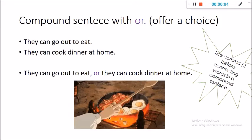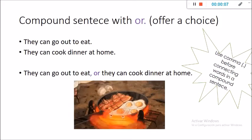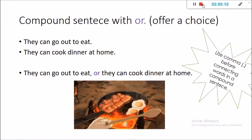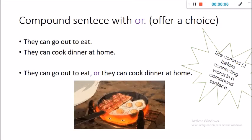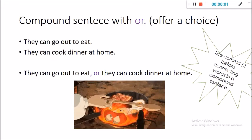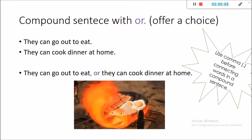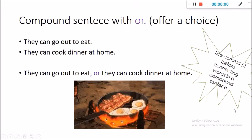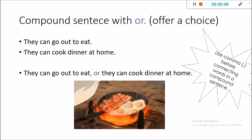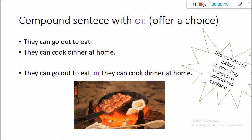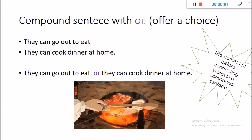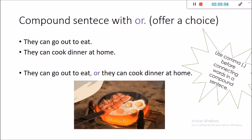Compound sentences with or — offer a choice. Enunciados compuestos con la palabra or. Aquí se utiliza el or cuando ofreces otra opción. Here I show you two different sentences: They can go out to eat. They can cook dinner at home. To make it a single sentence, it would be: They can go out to eat, or they can cook dinner at home. Recuerden que la palabra or se utiliza para ofrecer otra opción. Ellos pueden ir a comer o pueden hacer la comida en casa.